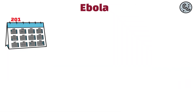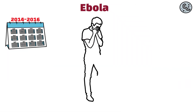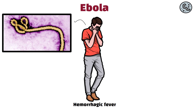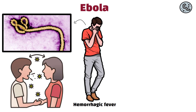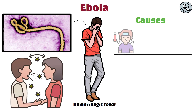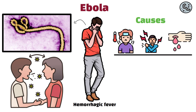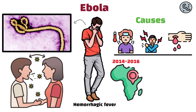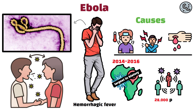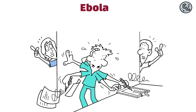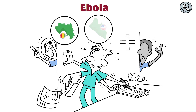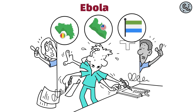Ebola, 2014 to 2016. Ebola is a severe viral hemorrhagic fever caused by the Ebola virus. Transmitted through contact with infected bodily fluids, it causes fever, muscle pain, and severe internal and external bleeding. The 2014 to 2016 West African Ebola epidemic was the largest in history, infecting over 28,000 people and claiming 11,325 lives. The outbreak overwhelmed healthcare systems in Guinea, Liberia, and Sierra Leone, leading to a global response to contain the virus.